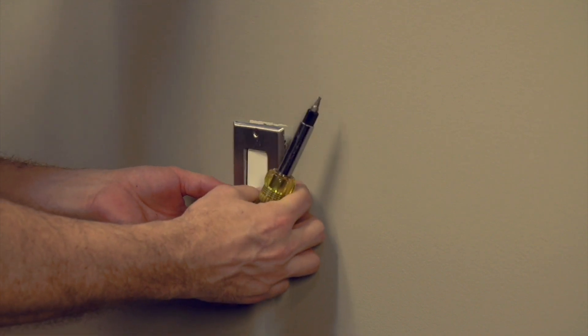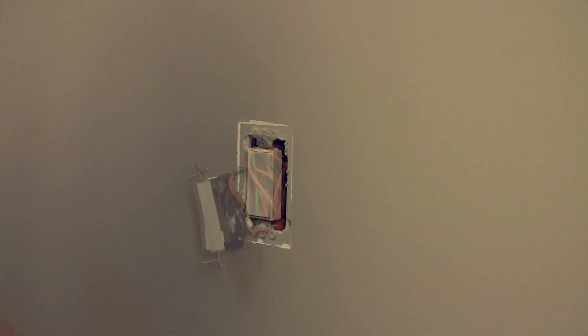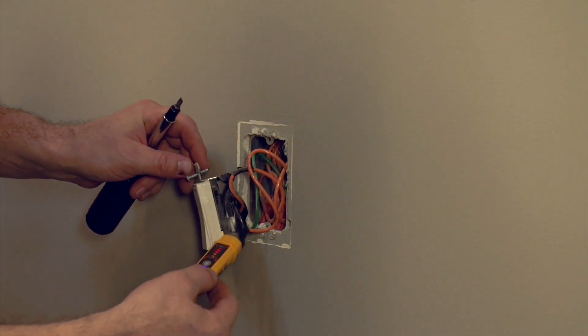When testing a power switch, unscrew and remove the cover plate, then place the nose of the tester against the screw terminals on the side of the switch.